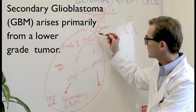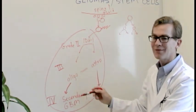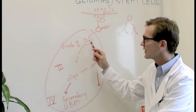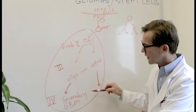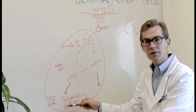And that's because it arises primarily from a lower grade tumor, usually has an IDH1 mutation, and then acquires multiple other mutations over years and years, typically. And then, unfortunately, can potentially become a glioblastoma.